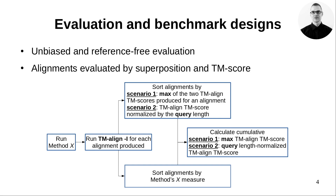The whole procedure can be described as follows. Run structure alignment method X. Use TM-Align to calculate TM-Score for each produced alignment. Then sort the alignments — they are always sorted by a method X measure, for example E-value, Z-score, etc. Additionally, the alignments are sorted by TM-Score calculated by TM-Align.